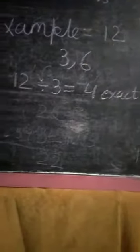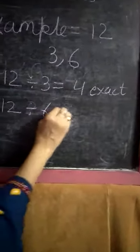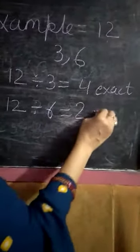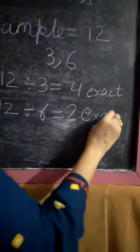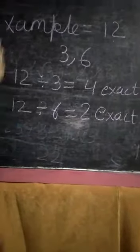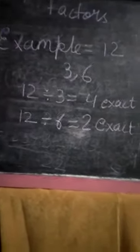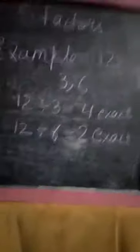Means no remainder is there. Again, 12 divided by 6 equals 2. 2 is an exact number. There is no remainder. Means a factor is a number that divides another number with no remainder. That is called a factor.